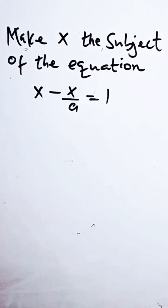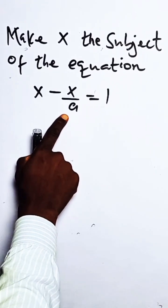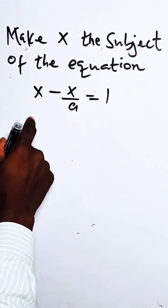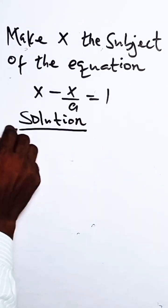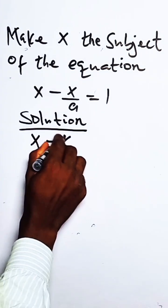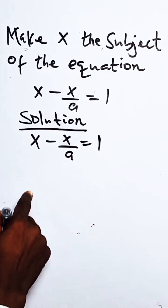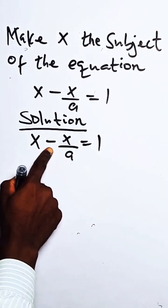Make x the subject of the equation. We have x minus x over a equals one. So how do we do this? Solution: For x minus x over a equals one, we can multiply both sides